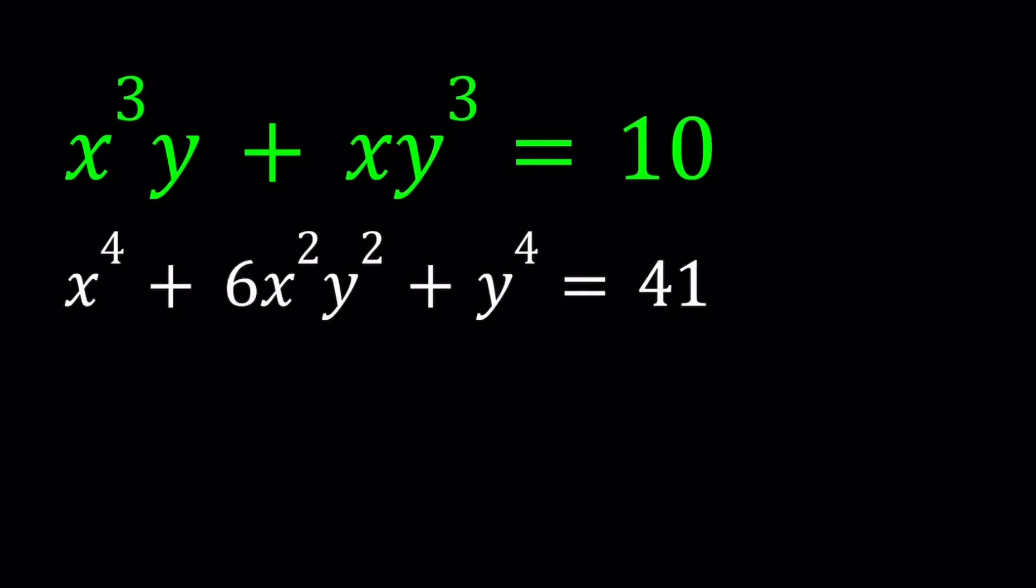Hello everyone. In this video we're going to be solving a homemade, fresh from the oven, polynomial system. So we have x cubed y plus xy cubed equals 10, and x to the fourth power plus 6x squared y squared plus y to the fourth power equals 41. We're going to be solving this system in two different ways. And at the end I'm going to show you a really cool graph.